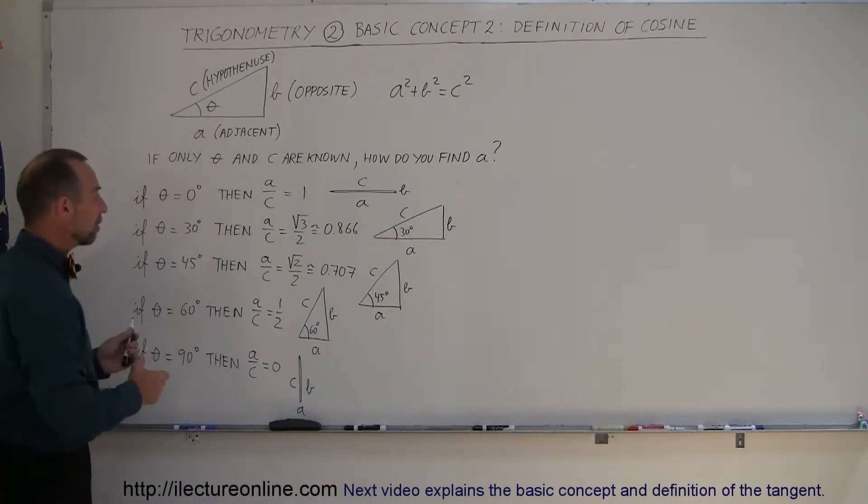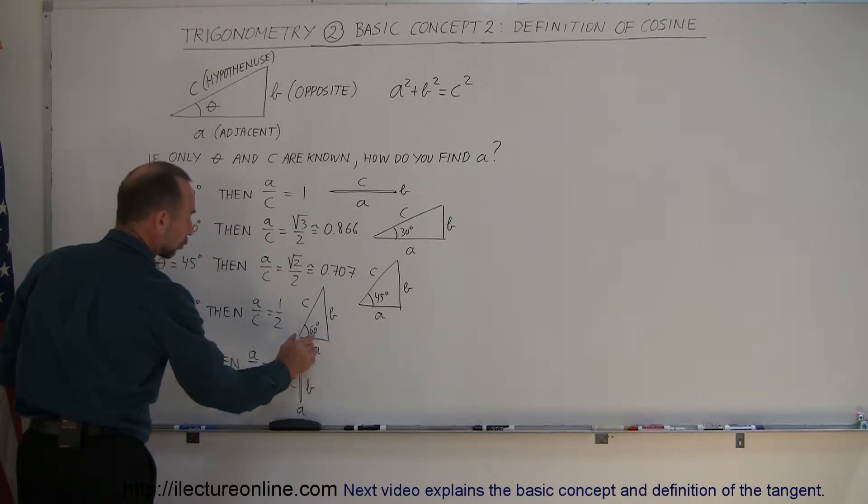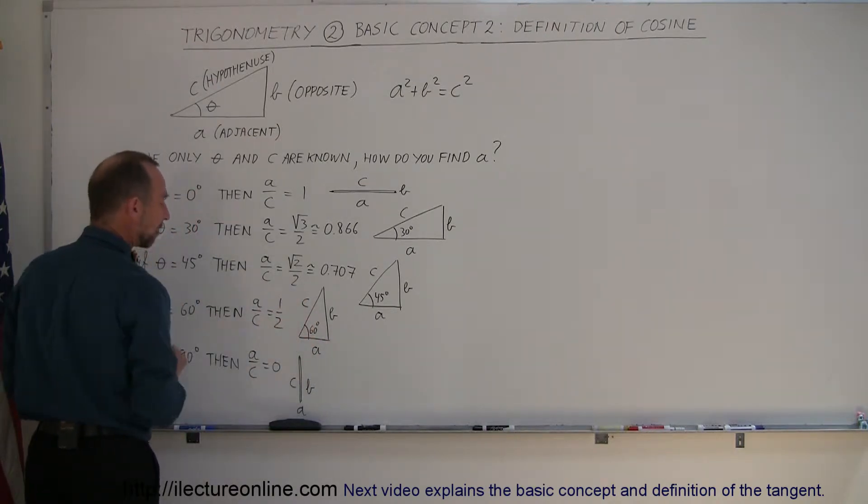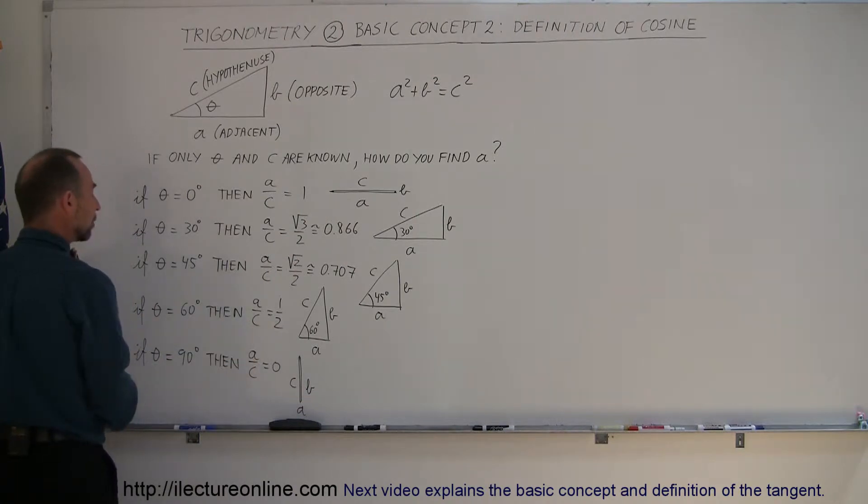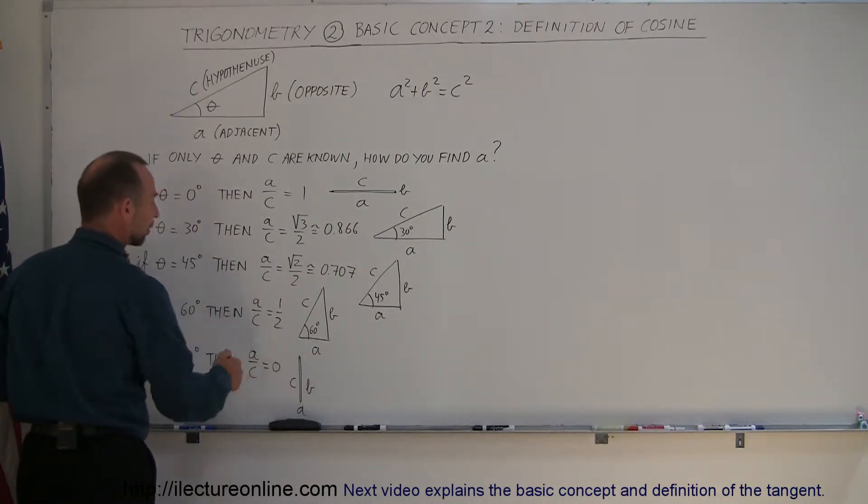If the angle is 60 degrees, you can see that a becomes shorter and shorter. Now the ratio of a over c is only one-half, and finally when the angle becomes 90 degrees, then the ratio of a over c is equal to zero.